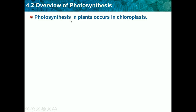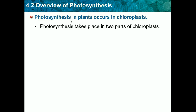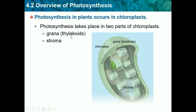Photosynthesis in plants occurs in chloroplasts, and it takes place in two parts: the grana or thylakoids, and the stroma. The grana is one stack of thylakoids — one thylakoid is one little disc and they're arranged in stacks called grana. The stroma is everywhere else; it's the gooey liquid that fills up the entire chloroplast, similar to the cytoplasm gel in a cell.